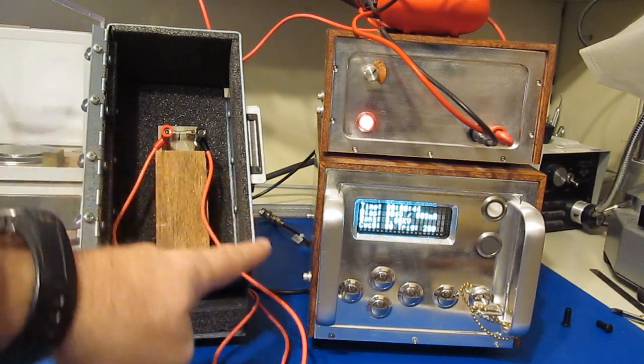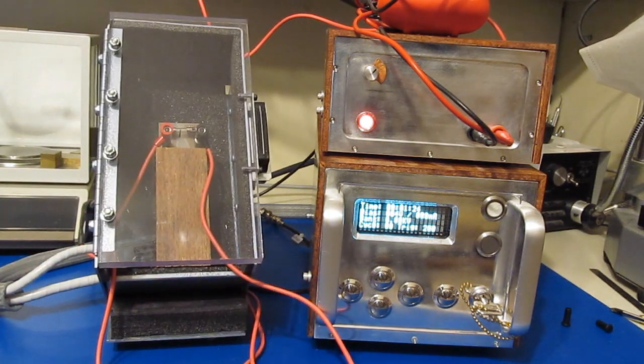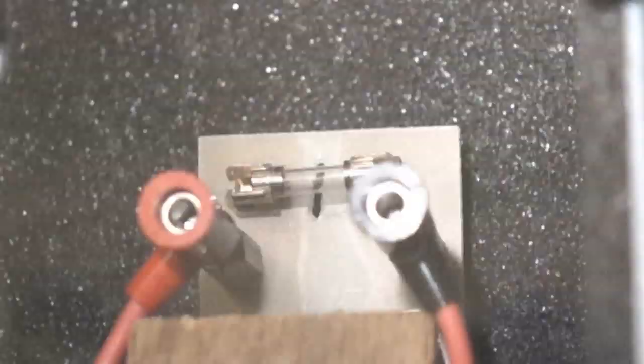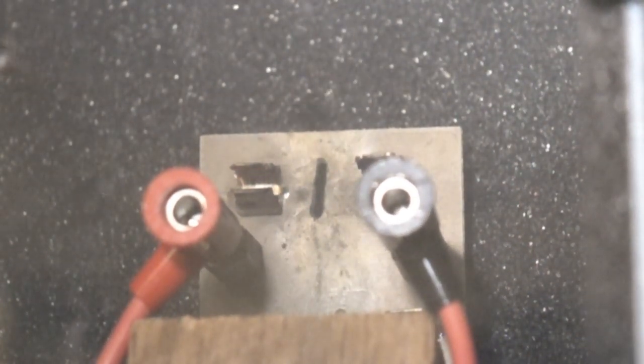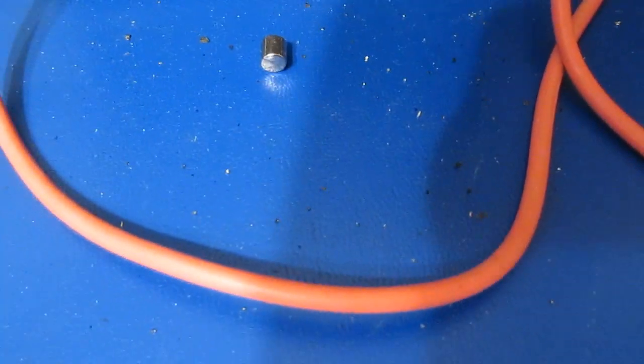As you can see, I've gone ahead and I've connected our small fuse block up here to our transient generator. I'll go ahead and apply a single transient off this generator and we can see if we can capture this with the camera. You can see there's basically nothing left of that fuse - a few fragments here, a little bit of dust, that's about it. And just see how the end of that fuse is buckled - a lot of pressure.